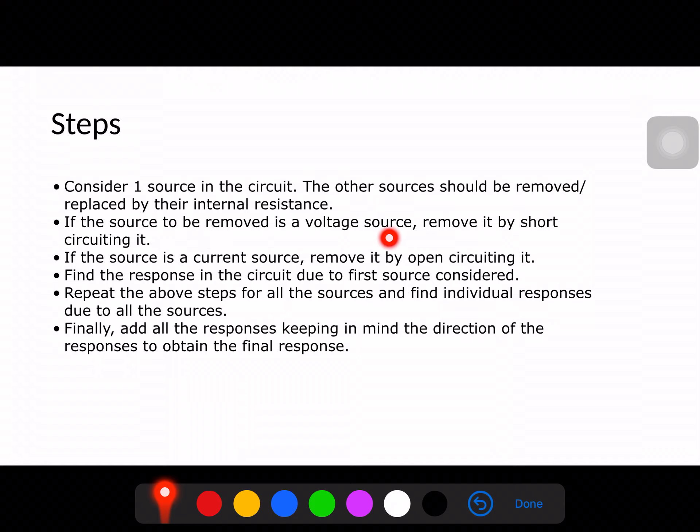If the source to be removed is a voltage source, remove it by short-circuiting it. That means if we consider one source and the other source is a voltage source, that will be removed by a short-circuit or replaced by a short-circuit. Similarly, if the source is a current source, remove it by open-circuiting. These two points are very important. For voltage source we will short-circuit to remove it, and for current source we will open-circuit to remove it.